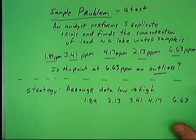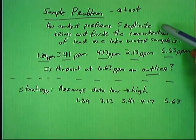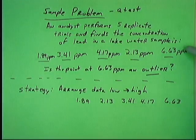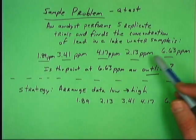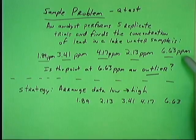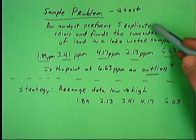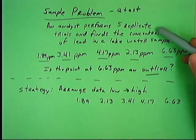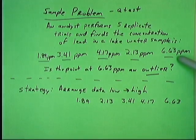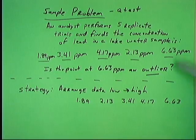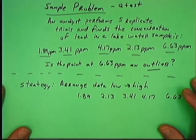So an example problem for the Q-Test would read as follows. An analyst performs five replicated trials and finds the concentration of lead in a lake water sample is 1.89 part per million, 3.41 part per million, 4.17, 2.13, and 6.63 parts per million. It's important to realize that these five data points are from exactly the same water sample. The analyst just performed five tests on the same exact water sample, just got different results. Okay. So as we scan this data, we suspect perhaps 6.63 parts per million is our outlier. We want to use the Q-Test to determine if that's the case. Okay. So let's perform a quick sample problem so we understand how this works.